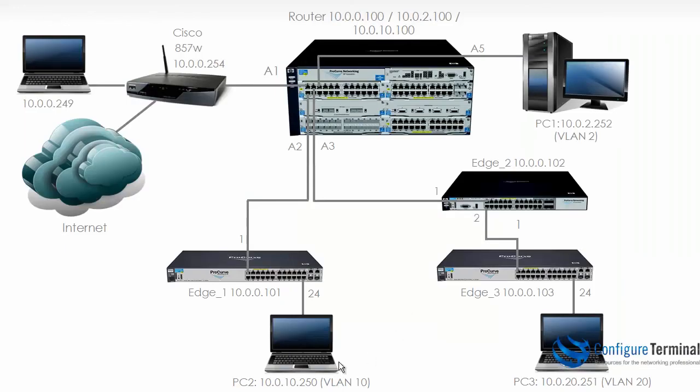We are able to ping from this device through Edge 1, our layer 2 switch, across the tagged link to the 5406, which does the inter-VLAN routing, and sends the traffic as an untagged frame to the Cisco router, which in turn sends it to our PC 10.0.0.249. So we have successfully configured inter-VLAN routing between VLAN 10 and VLAN 1.